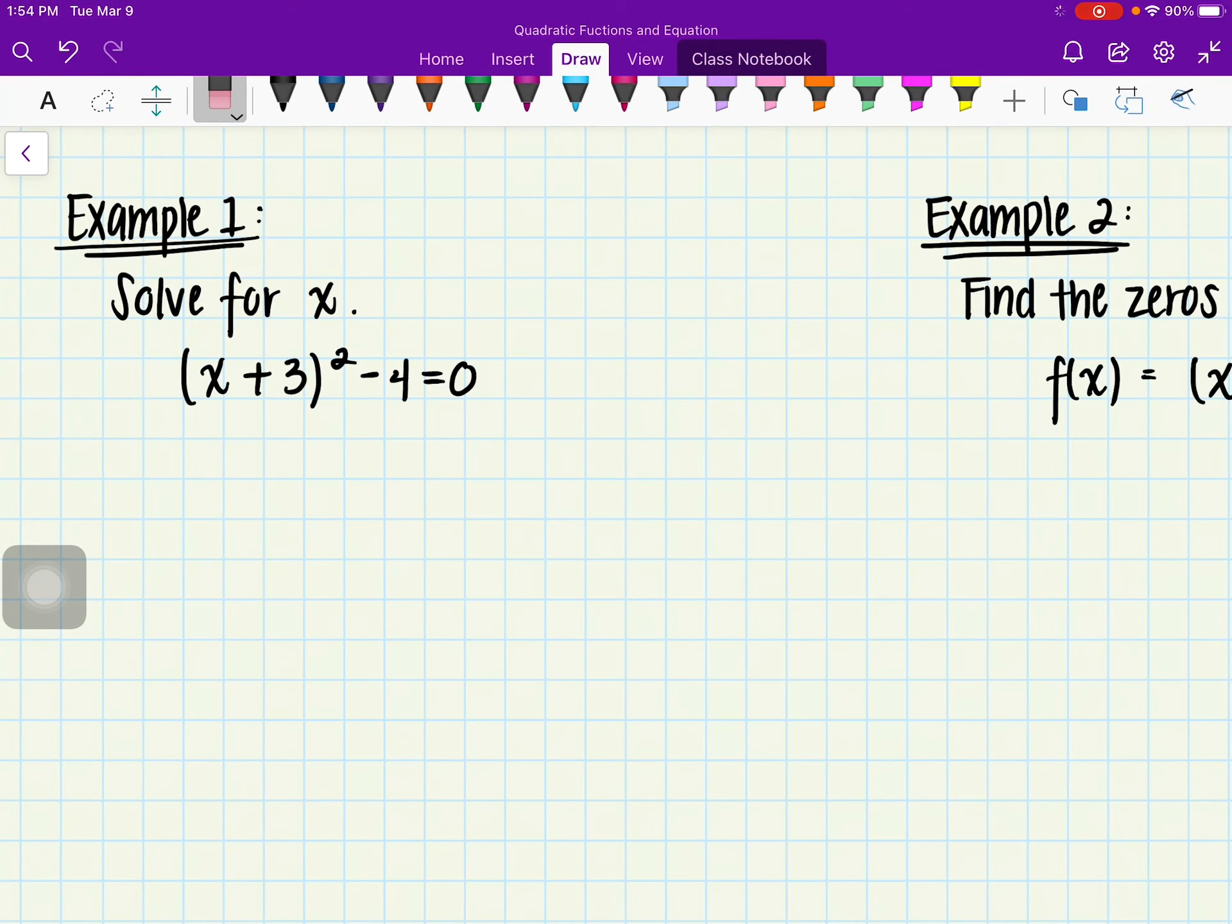Alright, so for example when we have the equation (x + 3)² - 4 = 0 and our goal in this case is to actually solve for x. So we want to go ahead and solve for x here.